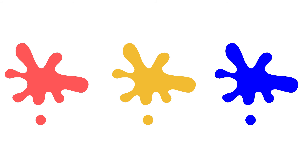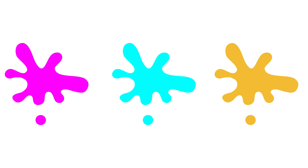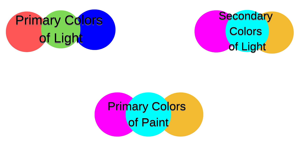So how does this all relate together? Remember before when I mentioned elementary school, we learned the primary colors of paint were red, yellow, and blue? Well, that's not necessarily true either. If you ask a professional artist, they would respond that the primary colors were magenta, cyan, and yellow — what we just learned are the secondary colors of light. So now you know the relationship between primary colors of light, secondary colors of light, and the primary colors of paint.